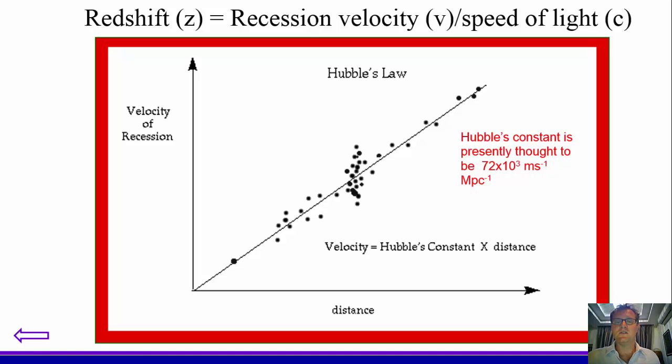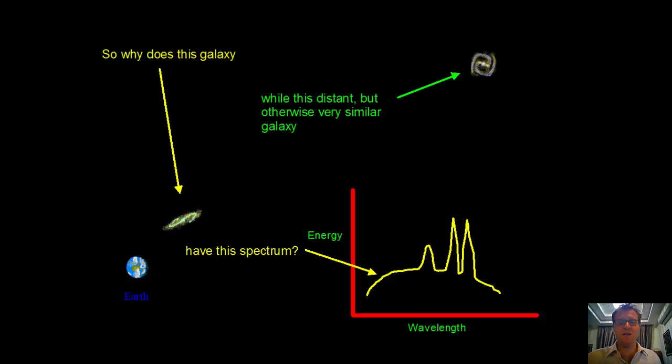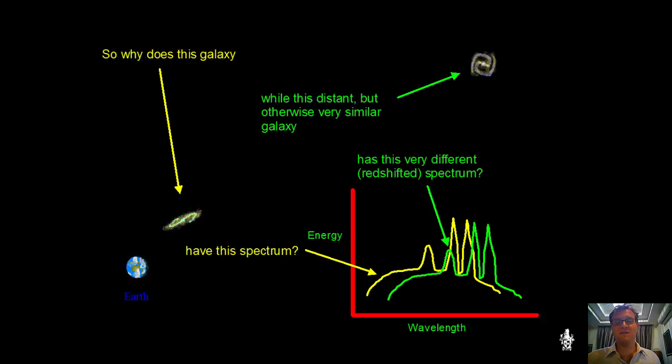Okay, so this is interesting and very useful. So let's think about how useful this can be. For a start, this explains why this close galaxy has a certain spectrum. And then this distant galaxy, which is very similar, but has a further redshifted spectrum. That's because it has a greater recession velocity. It's moving away from us at greater speed.